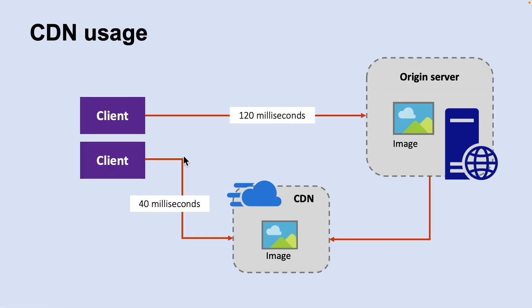CDNs are typically used to deliver static content such as images, style sheets, documents, client-side scripts, and HTML pages. The major advantage of using a CDN is lower latency and faster delivery of content to users regardless of their geographical location relative to the data center. CDNs can also help reduce the load on the web application, because the application does not have to serve requests for content hosted in the CDN.